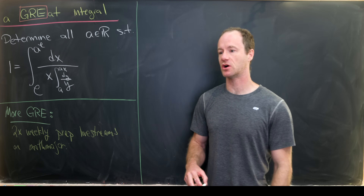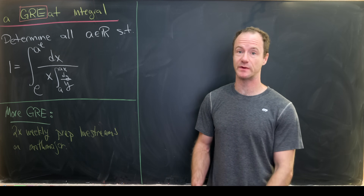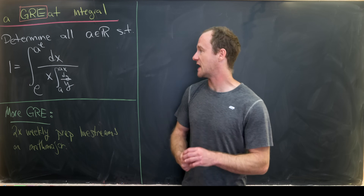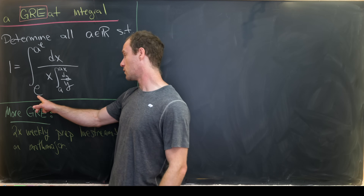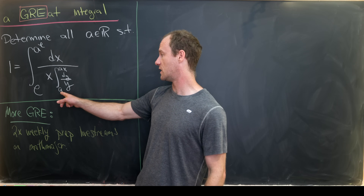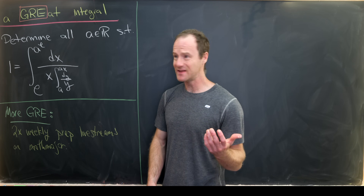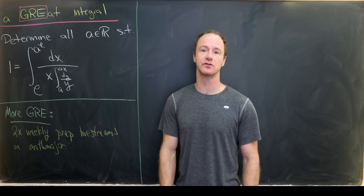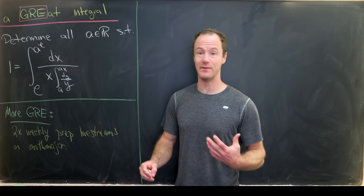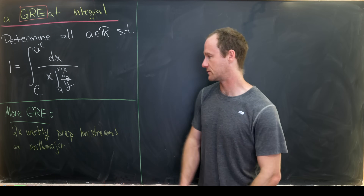Today I've got a nice integration problem that comes from the GRE, which is an exam used by some universities for graduate admission in the United States. Our goal is to determine all real numbers a such that 1 equals the integral from e to a to the e of dx over x, times the integral from a to a times x of dy over y. I like this because we've got this embedding of integrals within integrals.